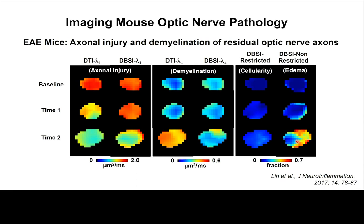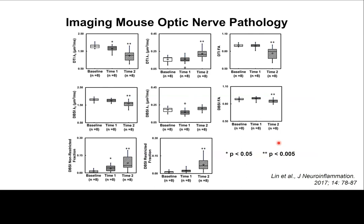Looking at the group average results: DTI can suggest axonal injury early at the first time point, at onset, and it gets worse. Demyelination appears at the second time point. Looking at FA — the combined effect of axial and radial diffusivity — it is most significantly affected at time two.